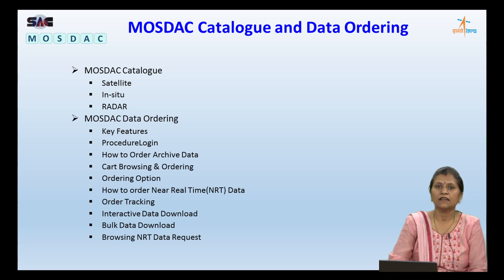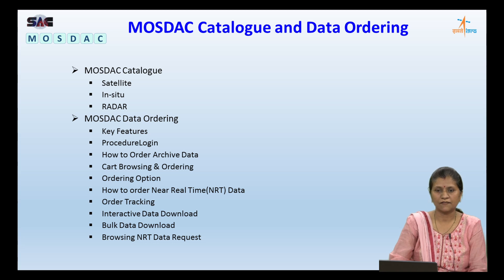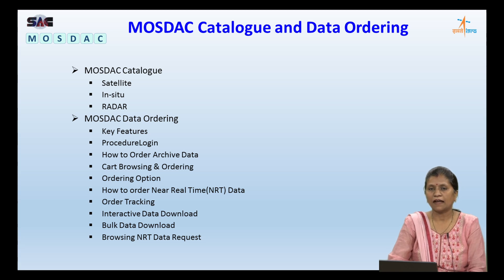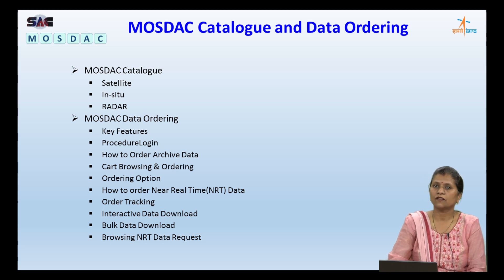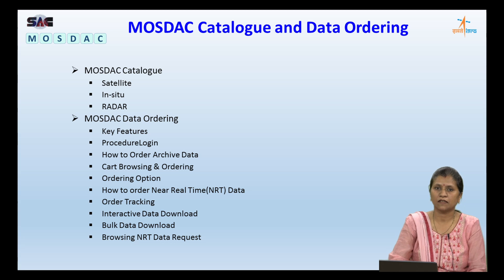MOSDAC also includes in-situ observations like DWR radar and automatic weather stations. Coming to the outline of my presentation: first we will cover the MOSDAC catalog, under which we will see the catalogs of satellite, in-situ, and radar. Subsequently we will see the data ordering, key features, and procedure to order data, various options available, how to get near real-time data, how to track the status of a placed order request, and data download options.